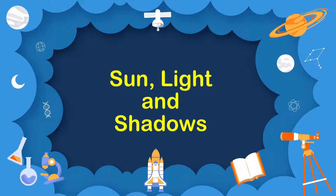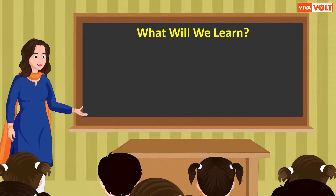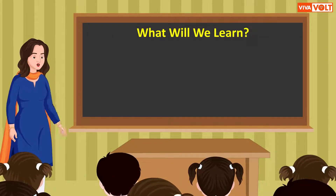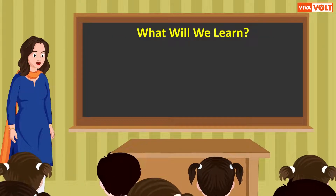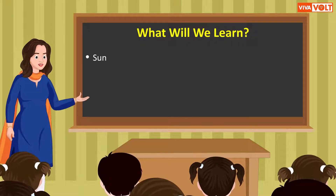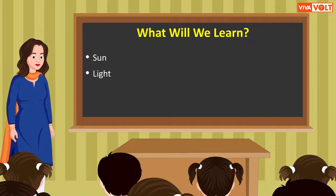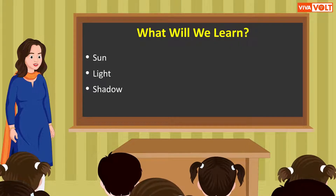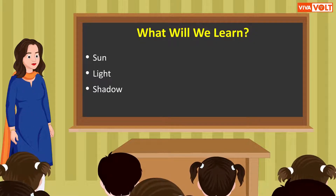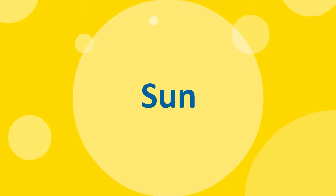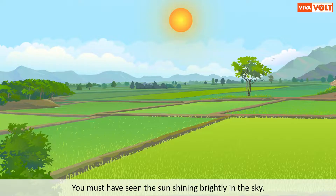Sunlight and shadows — what will we learn? We will learn about the following concepts in this lesson: sunlight and shadow. Let's get started. You must have seen the sun shining brightly in the sky.